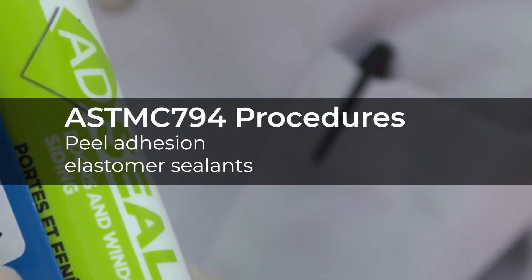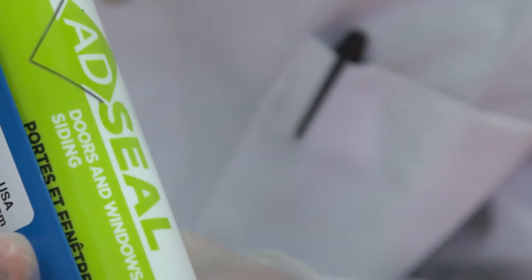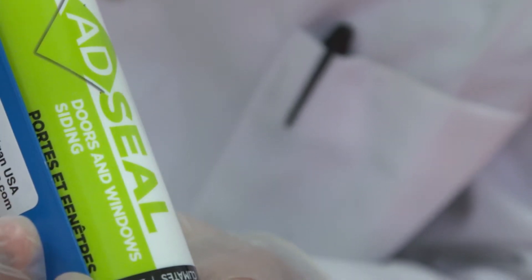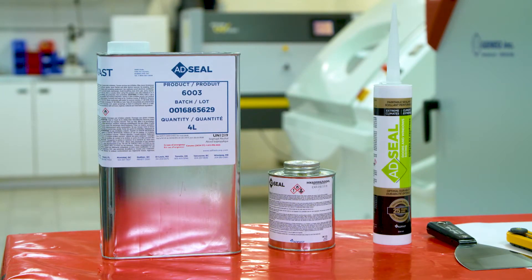In order to accomplish the adhesion test ASTM C794, the following products are required: Adseal 6003 Cleaner, Adseal MK60095 Primer, and Sealant Tube.